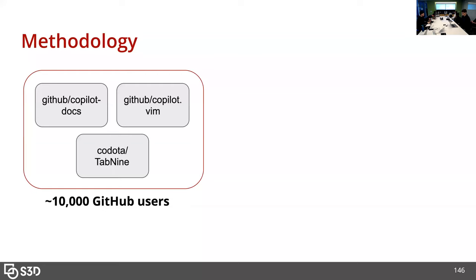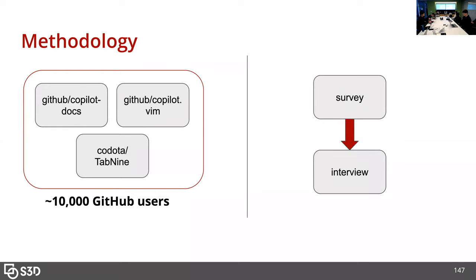For this methodology, I mined about 10,000 GitHub users from three code generation repositories — two from the official GitHub co-pilot account, and one from another code generation option called Tabnine. I basically mined all users that had watched, starred, or otherwise interacted with those repositories. In total I have about 10,000 GitHub users we could potentially send a survey to. I'll then send a survey to quantify these usability issues, and maybe based on results, scope out interesting findings and dig further using interview protocol.